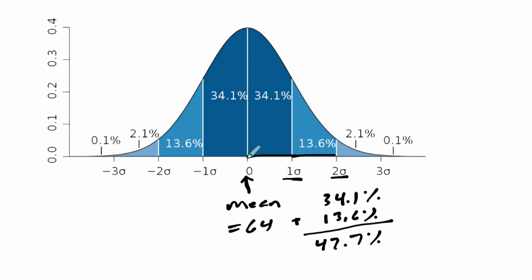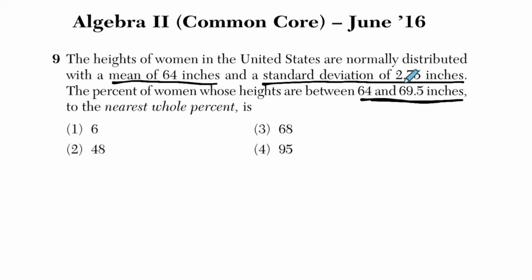And why do I add those two up? Because we are told, if we go back to the problem, the standard deviation is 2.75 inches. If you take 2.75 and you double it, what do you get? You get 5.5.